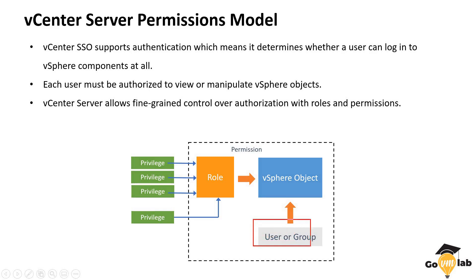The last component is users or groups. When creating these roles, we need to associate or bind them to a set of users. In an organization, we might have L1 users and L3 users. We categorize users into predefined groups and then assign those roles to those groups. That's how we maintain complete role-based access control in our vSphere environment.